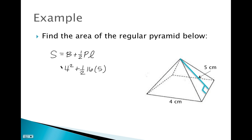When you plug all of that into your calculator, you get a surface area of 56 centimeters squared. That's how you use the formula to find the surface area of a regular pyramid.